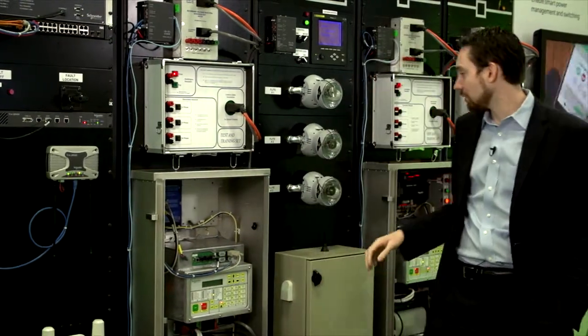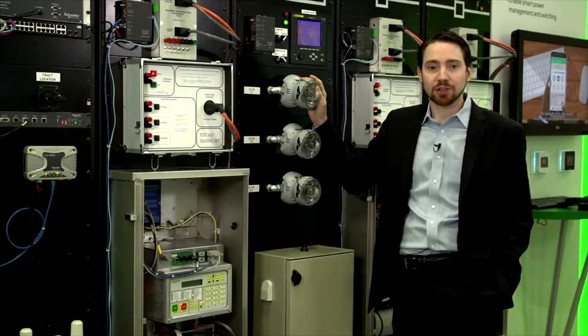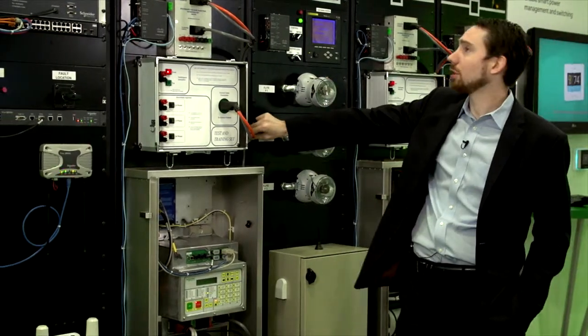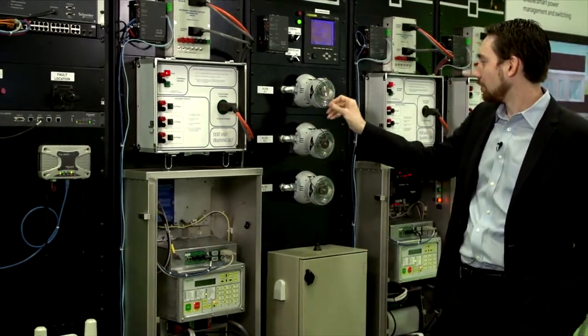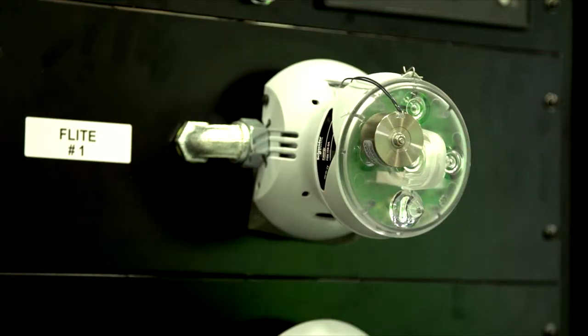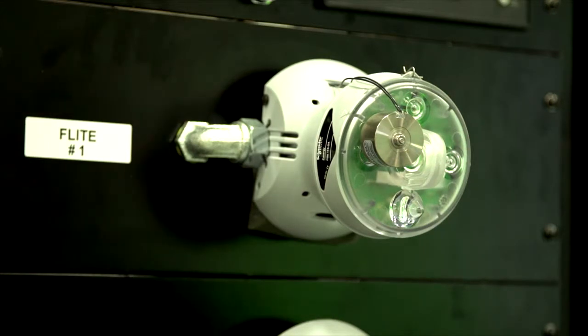Now finally we have on our feeder automation wall is our FLIRs. These guys are nice because you can go hook them up on a line somewhere, and when a fault occurs, you'll get a nice bright flashing light that the line crew can go and easily see.